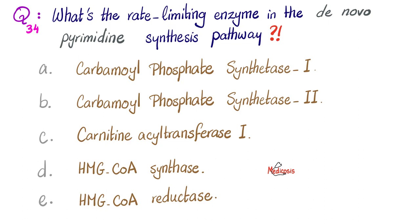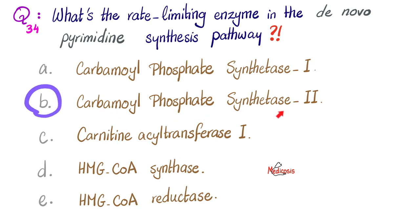What is the rate-limiting enzyme in the de novo pyrimidine synthesis pathway? Is it A, carbamoyl phosphate synthetase 1, or B, carbamoyl phosphate synthetase 2, or C, carnitine acyltransferase 1, or D, HMG-CoA synthase, or E, HMG-CoA reductase? Please pause. The answer is carbamoyl phosphate synthetase number 2.